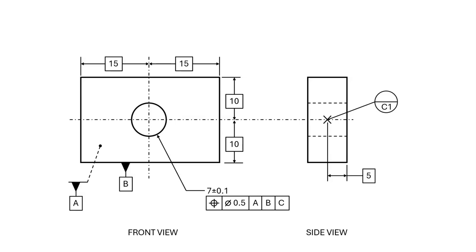In this drawing, datum feature symbols A and B indicate that datum A is established by datum feature A and datum B is established by datum feature B. Datum target C1 indicates that datum C is established by a single point.